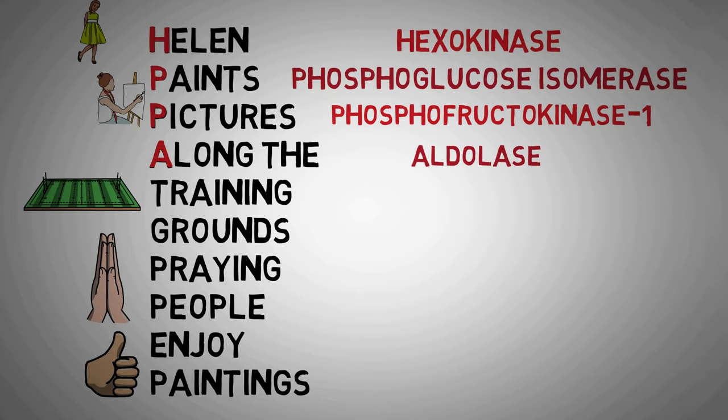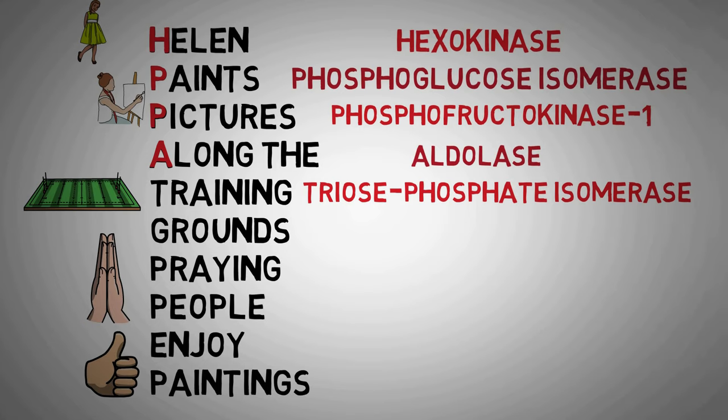Next we have aldolase from the letter A. This enzyme breaks down fructose 1,6-bisphosphate into glyceraldehyde 3-phosphate and dihydroxyacetone phosphate. The next enzyme is again an isomerase that catalyzes the isomerization of glyceraldehyde 3-phosphate to dihydroxyacetone phosphate and vice versa. Now since this isomerase is acting on three-carbon compounds, the glyceraldehyde 3-phosphate and dihydroxyacetone phosphate, the complete name for the enzyme is triose phosphate isomerase, therefore the letter T.